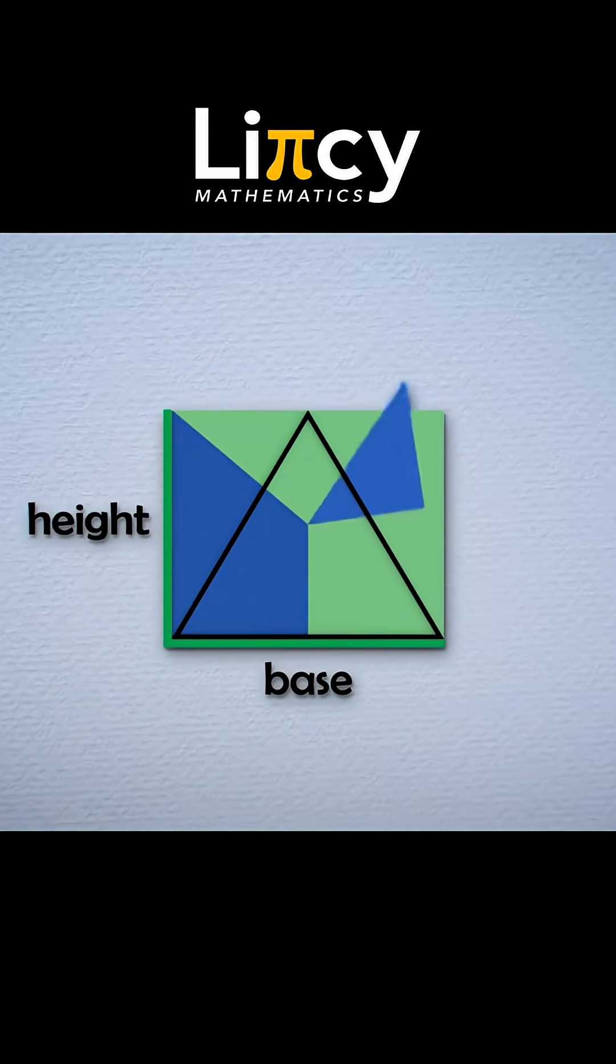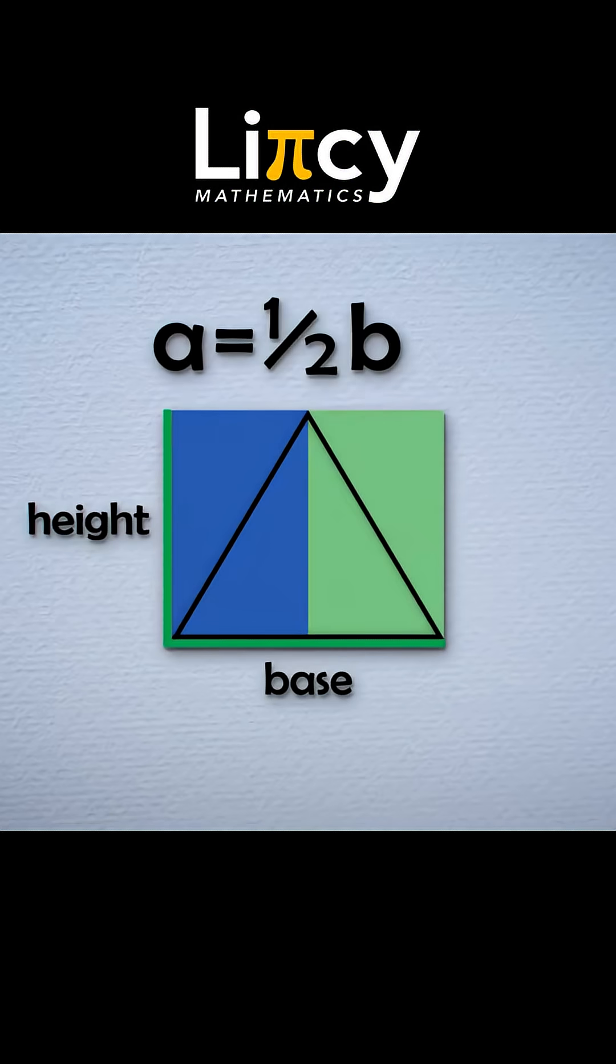The triangle fits inside exactly half of this rectangle. So the overall area of a triangle is one half of its base times its height.